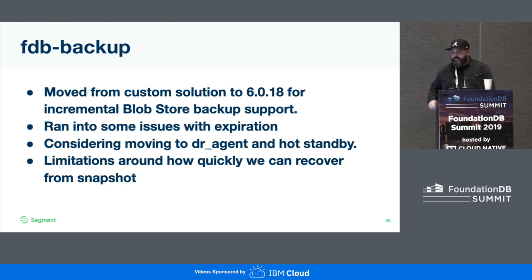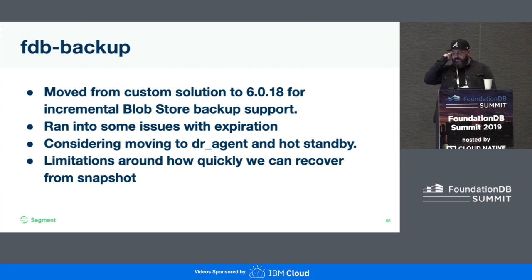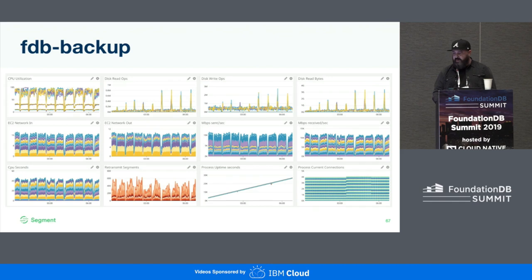When we started we were on a 6.0 version, and we moved to a newer version for the blob store backup support. It was pretty smooth. We ran into a couple of issues with expiring data — I think we were one of the first people to use it, because I was posting on the forum asking questions and we were sort of early on with it. We're considering moving to a hot standby with the DR agent, because of the limitations we've seen around how quickly we can recover from backup.